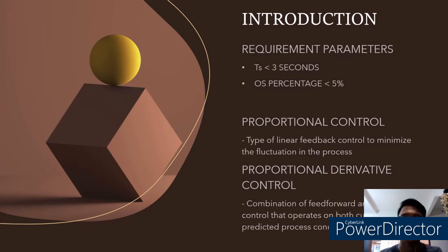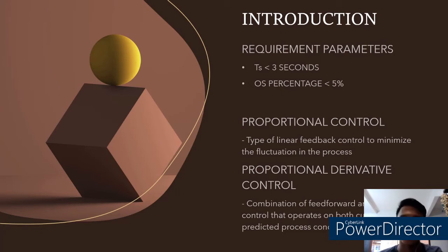A very good day to the lecturers and the audience. My name is Loving Chen, metric number FB18021. I will be presenting the introduction of our project. In this coursework, a controller is designed to fulfill the requirement of settling time TS less than 3 seconds and percentage overshoot OS less than 5%.